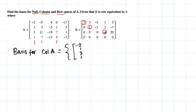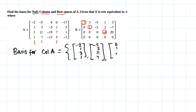B is used to identify the pivot column locations, but the actual basis vectors come from A. So the basis for col(A) is: column 1 = [-2, 1, 3, 1], column 2 = [-5, 3, 11, 7], and column 4 = [0, 1, 7, 5]. These vectors are linearly independent and span the column space.